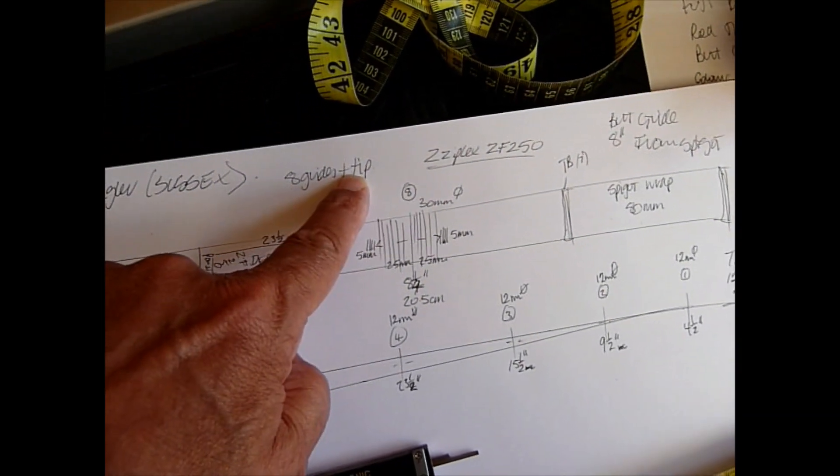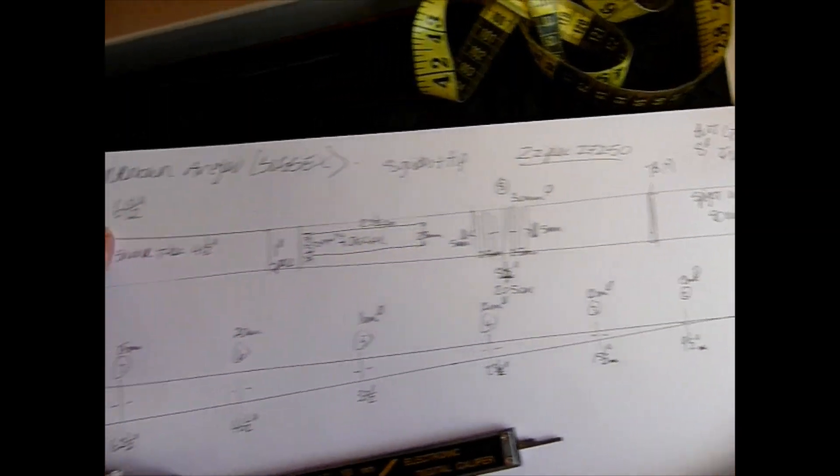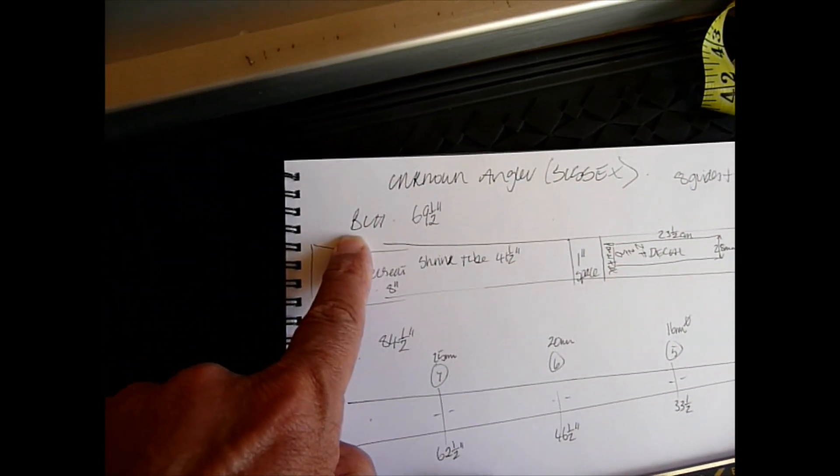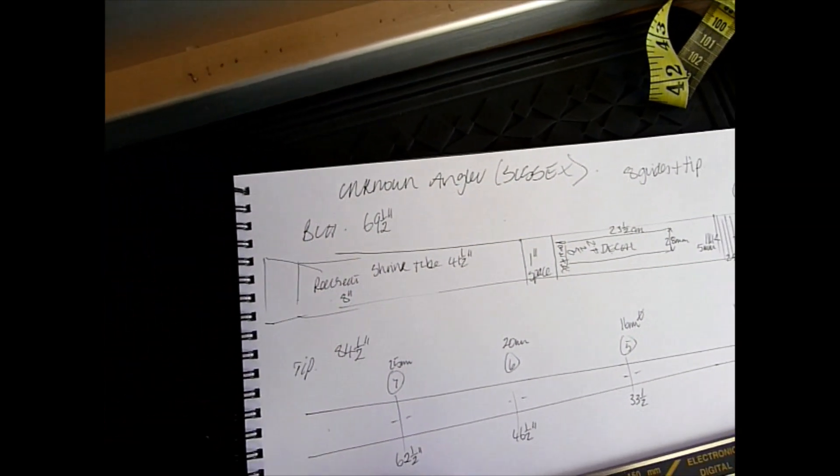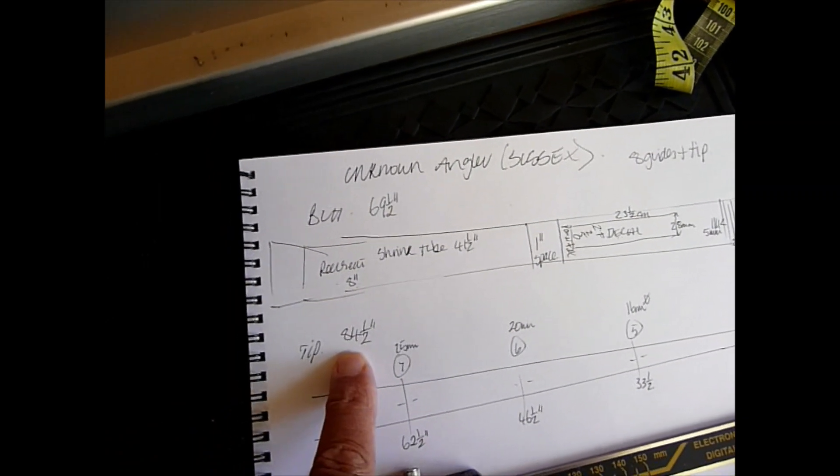It's got eight guides and a tip. I've measured the butt section, so I know that it's sixty-nine and a half inches, and the tip section is eighty-four and a half.